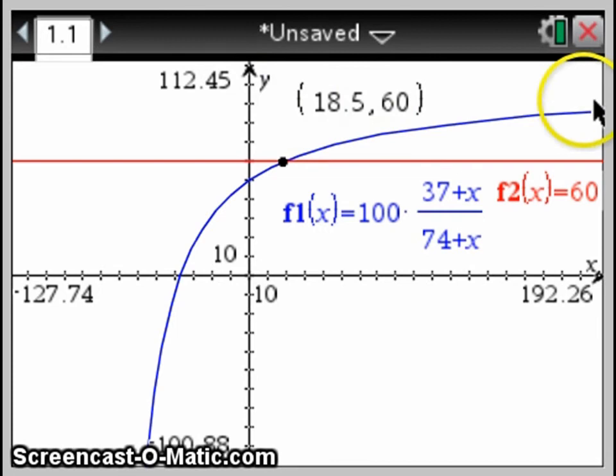Now, for a reasonable domain and range, I have to think about what's realistic in this situation. Well, I certainly can't win a negative number of games. That doesn't make any sense. I have to win 0 or more games. So the number of games that I can win can only be non-negative, 0 or positive numbers. And as far as the range is concerned, that's going to be limited by how many more games are left in my season. For example, I've already played 74 games, and suppose there's only 25 games left in the season. Well, I know that I could get to my 60% by winning 19 of those 25, but even if I won all 25 of those games, my record would only be 37 plus 25 divided by 74 plus 25, or about 63%. So the reasonable range for my situation would be 0 to 63%, and the reasonable domain would be 0 to however many games that I actually play.